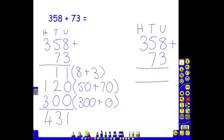We have the reminder to children that we always start on the right-hand side. We always start with the least significant digit first. Here we have eight add three. Eight add three is eleven.